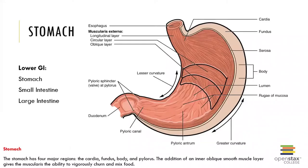Now we move into our understanding of the stomach. The mouth, pharynx, and esophagus are all considered the upper GI tract — important to know for quizzes and exams. The stomach on down is considered the lower gastrointestinal tract. The lower GI consists of the stomach, the small intestine, and the large intestine.